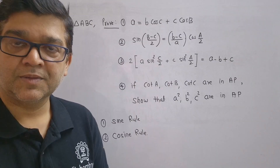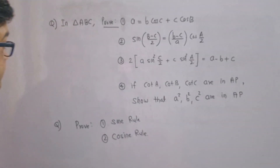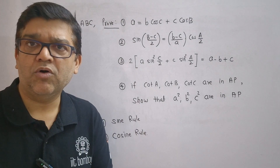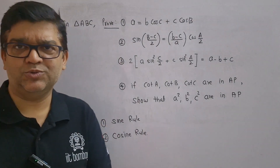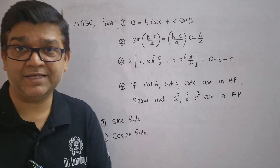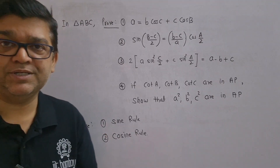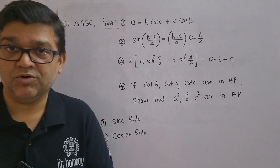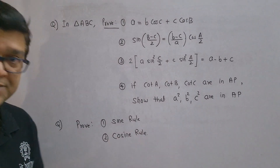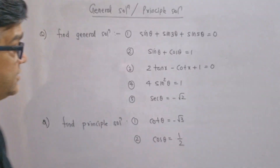Let us now move on to trigonometric functions. The most favorite section is triangle. They ask proofs like: in triangle ABC, a = b·cosC + c·cosB; or prove that sin((B−C)/2) = ((b−c)/a)·cos(A/2); or prove that 2a·sin²(C/2) + c·sin²(A/2) = a − b + c; or if cotA, cotB, cotC are in AP then show that a², b², c² are also in AP. Also prove the sine rule and cosine rule.